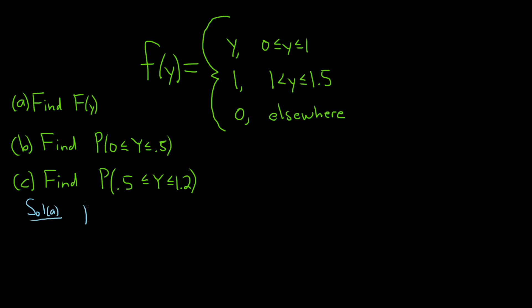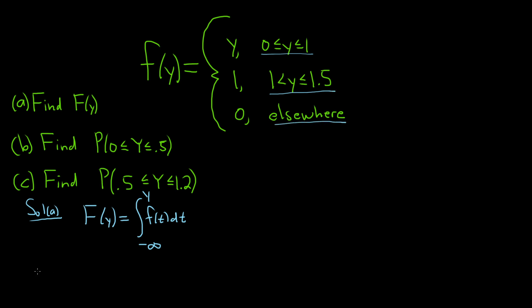Recall that big F of y is equal to the improper integral from negative infinity to y of f of t dt. So we'll just have to carefully take cases to figure out what it is. Let's first focus on the case where y is less than zero, going from the smaller numbers to the bigger numbers — between zero and one, between one and one point five, and then everywhere else.